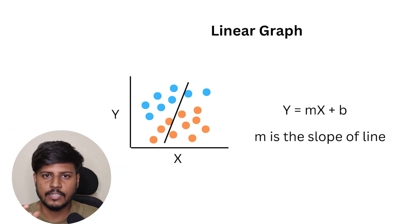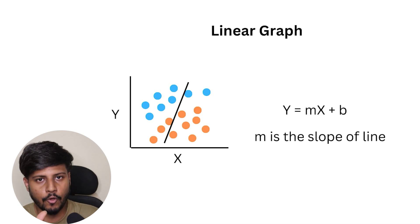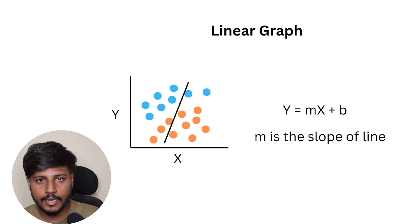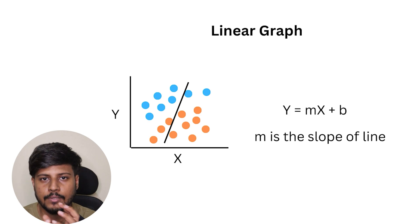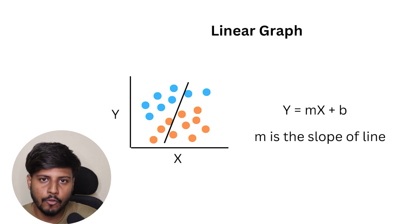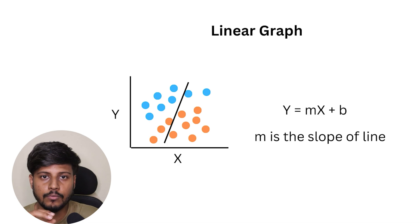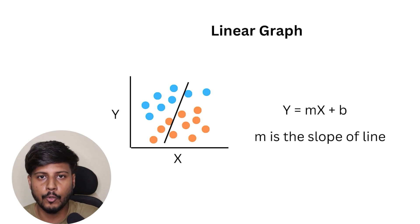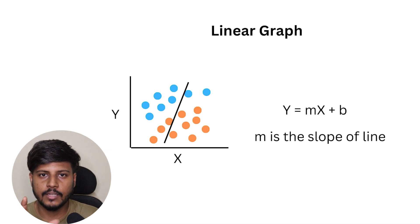You might be wondering what 'linear' and 'non-linearity' actually mean. In the mathematical context, a linear relationship between two variables means that if the value of variable A changes, the value of variable B is also affected. This kind of relationship can be described as a straight line on a graph, represented by the equation y = mx + b, where y is the intercept and m is the slope of the line.